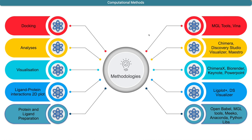Chimera can be installed on Windows, Mac, and Linux. However, Discovery Studio Visualizer is only available for Windows and Linux platforms. Mac users will need to install a Windows environment inside their Mac to run Discovery Studio Visualizer. I'm going to go through all the software required for molecular docking and molecular modeling analysis.